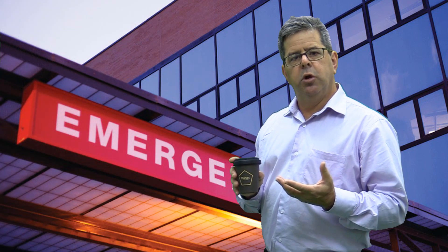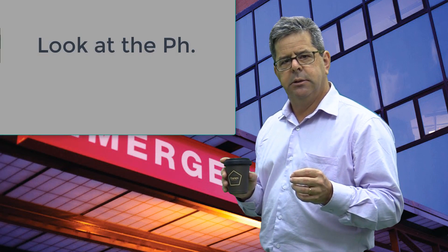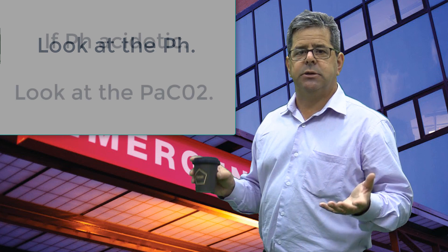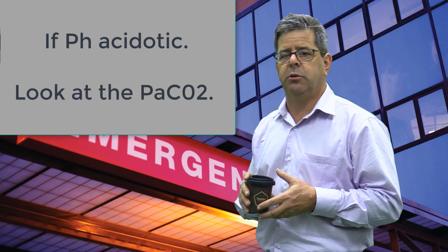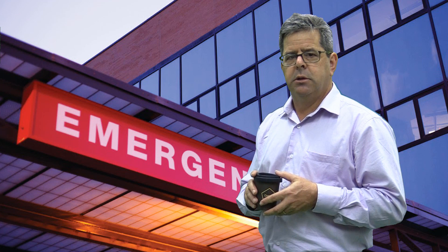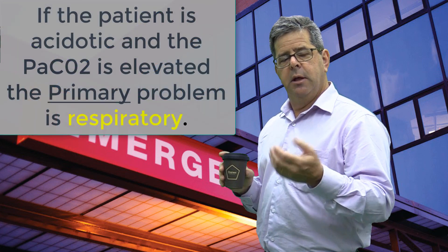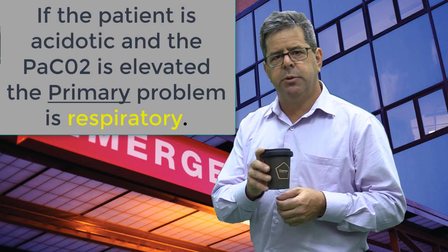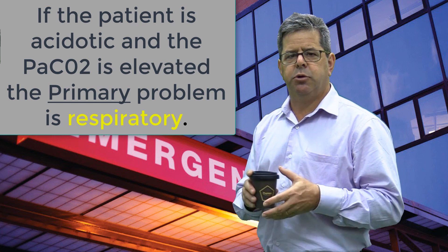So how do you interpret a blood gas? First, look at the pH. If it's acidotic, your next step is to look at the CO2. If the CO2 is elevated, the primary problem is respiratory — it's primarily a respiratory acidosis.